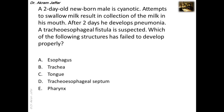Here, a two-day-old newborn male is cyanotic. Attempts to swallow milk result in collection of the milk in his mouth, and after two days he develops pneumonia. A tracheoesophageal fistula is suspected. Which one of the following structures has failed to develop properly? The correct answer is the tracheoesophageal septum.